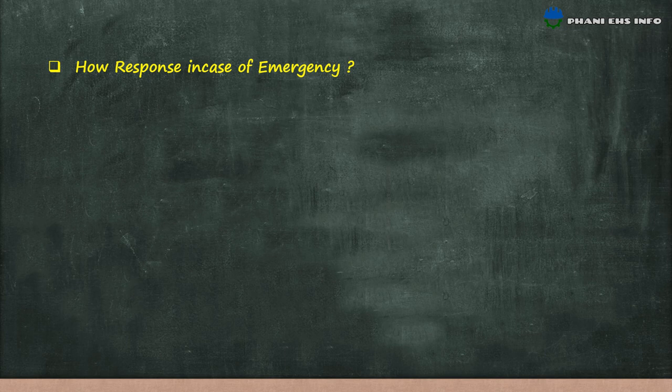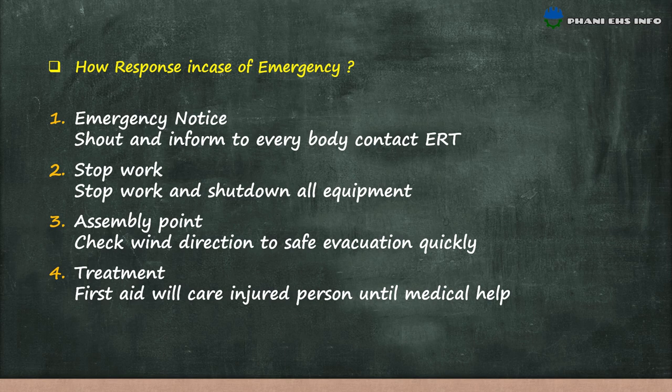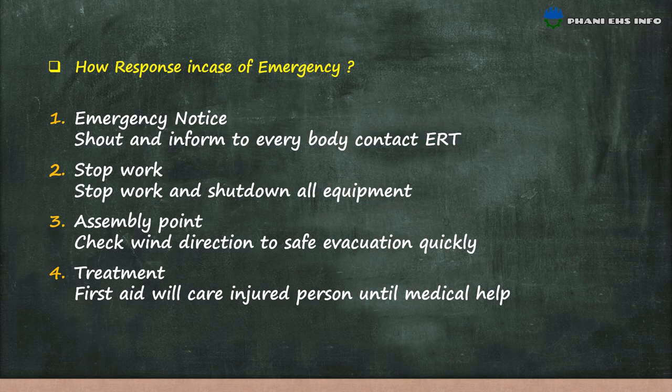How to respond in case of emergency? You have to respond by following these 4 steps: 1. Emergency notice — shout and inform everybody, and contact the ERT. 2. Stop work — stop work and shut down all equipment. 3. Assembly point — check wind direction for safe evacuation quickly. 4. Treatment — first aid will take care of injured persons until medical help arrives.